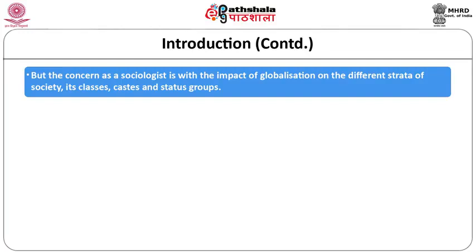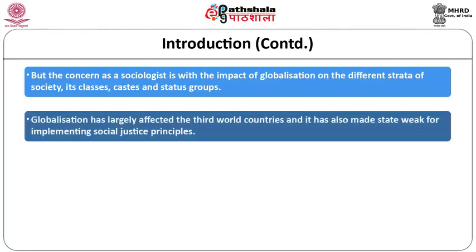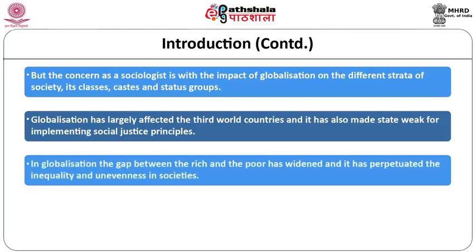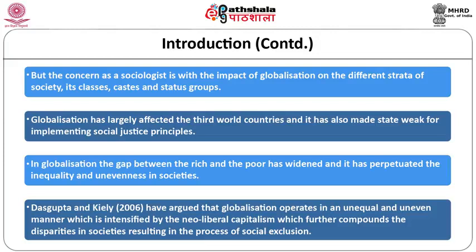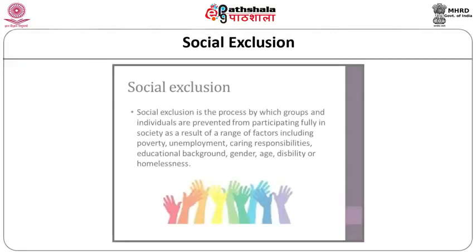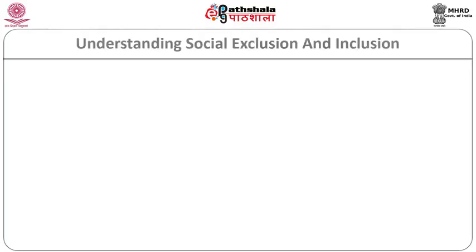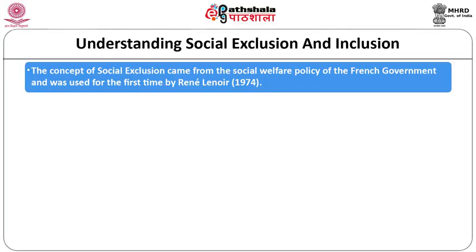The concern for a sociologist is with the impact of globalization on different strata of society — namely classes, caste and status groups. Globalization has largely affected the third world and made states weak in implementing social justice principles. The gap between the rich and the poor has widened, perpetuating inequality. Das Gupta and Khali have argued that globalization operates in an unequal and uneven manner, intensified by neoliberal capitalism, resulting in social exclusion.